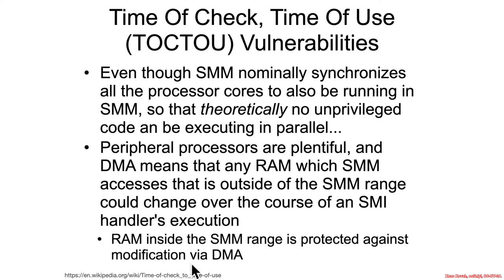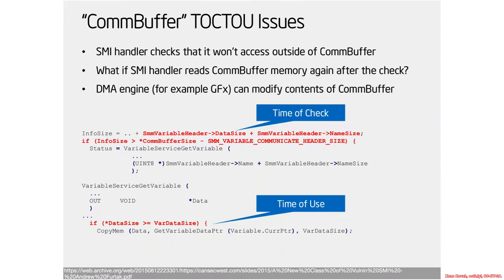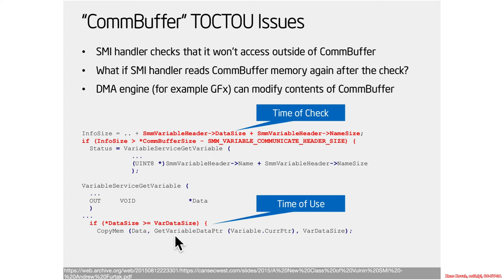These peripheral processors can't just directly DMA into the SMM range — into SMRAM — because that's protected against DMA. Here's a vulnerability that Intel researchers found in the open source UEFI source code. It involves a data size that's added to a name size to get an info size. If the info size is greater than some size, you continue and get a variable. Then later on it checks the data size again from earlier and checks if it's greater than a var data size, and if so, it does a mem copy.